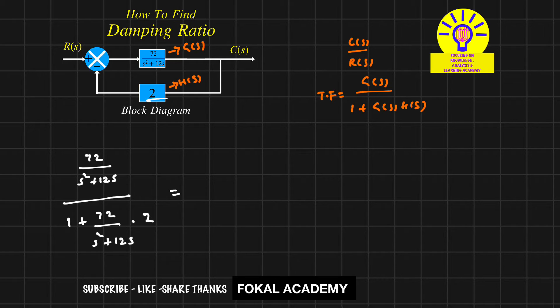This equals 72/(s² + 2s) divided by [(s² + 2s) + 144]/(s² + 2s). Taking the LCM, we have (s² + 2s) times 1 plus 72 times 2, which equals 144.